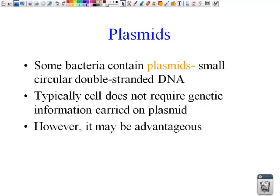Plasmids are a little bit funny. Some bacteria contain them, some don't. They are a small circle of double-stranded DNA. Cells do not typically require these plasmids for their genetic information, but they may be advantageous. For example, a plasmid may allow a bacteria to become antibiotic-resistant. That's actually what has happened with MRSA — Staphylococcus aureus has become methicillin-resistant by picking up a plasmid, a little bit of DNA that allows it to combat our antibiotic.